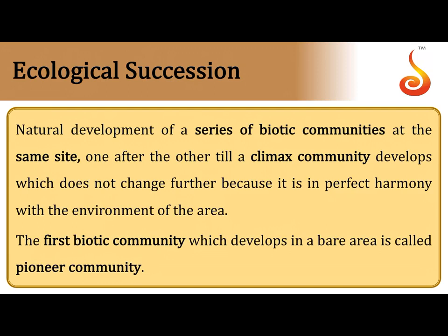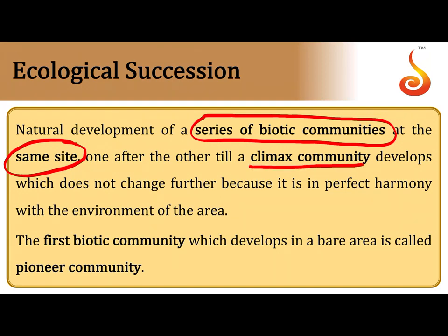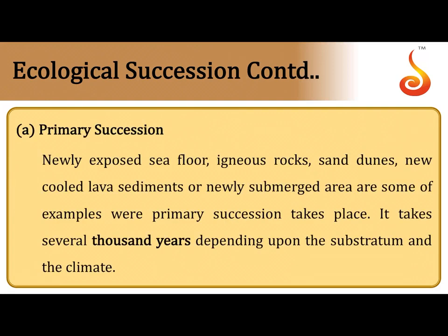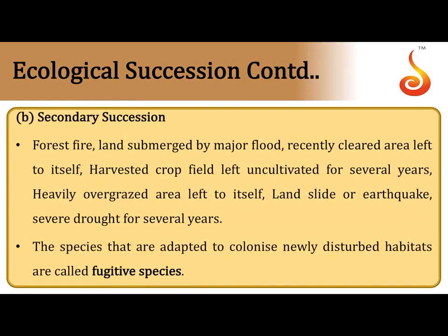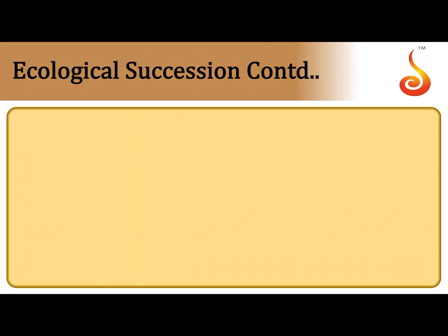Ecological succession involves a series of changing biotic communities in a given area until a stable climax community is reached. The first biotic community is the pioneer community. If a land develops a community for the very first time, it is primary succession, which takes thousands of years. If life previously existed but was eliminated by a natural calamity and new life is re-established, it is secondary succession.